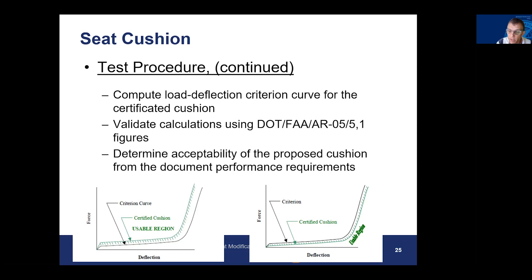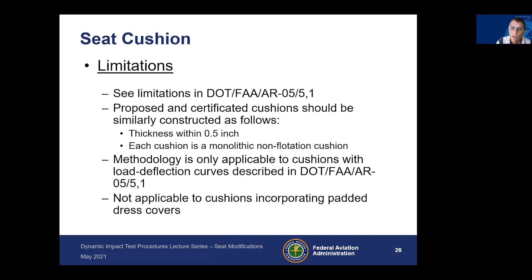From this, you look at a criterion curve and identify the usable region. As long as your cushion response falls within that usable region, it's considered an acceptable cushion. However, if you fall outside of that usable region, the cushion would not be acceptable for replacement using this component methodology.